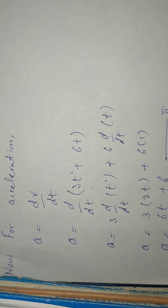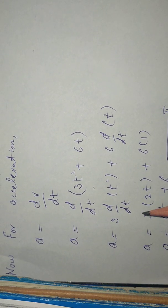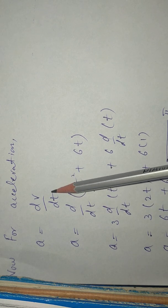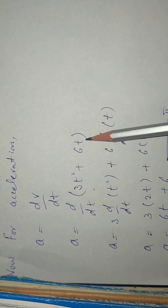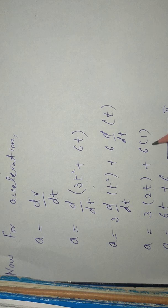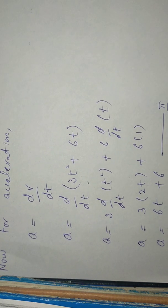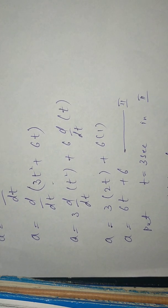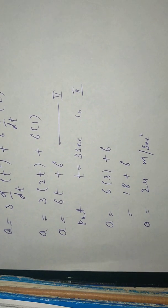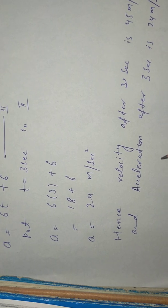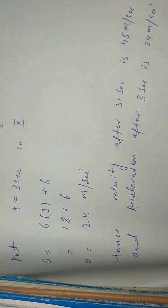Now for acceleration, we know that acceleration is dv by dt. From equation number one, velocity is 3t squared plus 6t. The derivative of 3t squared is 6t and the derivative of 6t is 6, giving acceleration equal to 6t plus 6 — this is equation number two. Putting t equal to 3 seconds: 6 multiplied by 3 is 18, plus 6 equals 24 meters per second squared. So velocity after 3 seconds is 45 meters per second and acceleration after 3 seconds is 24 meters per second squared.